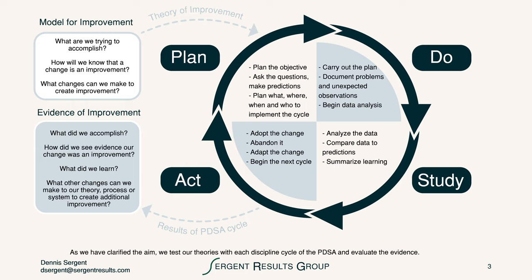Once we've clarified the aim, we can go test our theory with each disciplined step of this cycle, and we can repeat the cycle as often as we need to until we have the results that constitute an improvement — or several improvements — in a process. Once we've executed the plan-do-study-act cycle, we have an opportunity to look at the results in the evidence of improvement. Those questions are also included within the template.